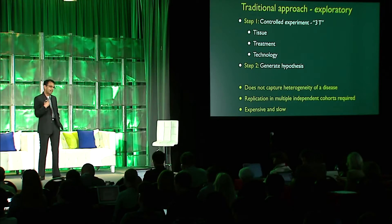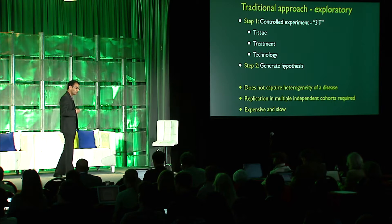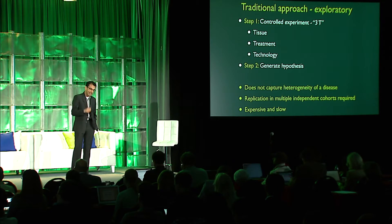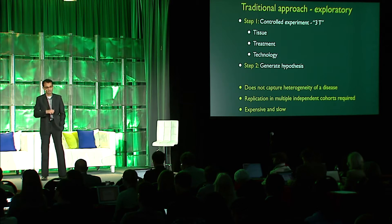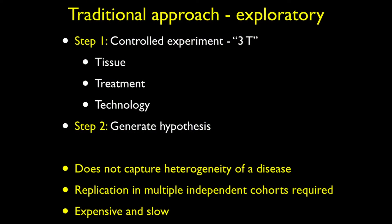Once we generate this data, we look at it and generate hypotheses. But the problem is that this controlled experiment does not capture the heterogeneity of a disease. That's why, once you have a conclusion and publish it, before you can take it to clinic, you have to validate it in multiple independent cohorts — sometimes called randomized controlled trials. The problem is that it's expensive and slow, because you have to replicate it many times.